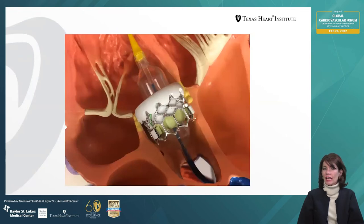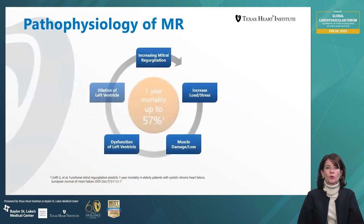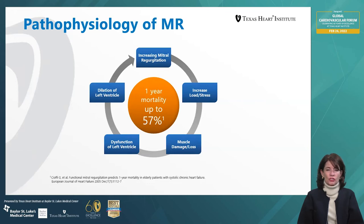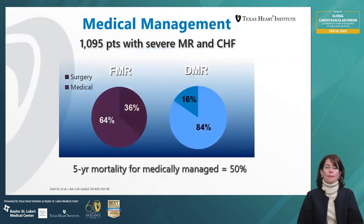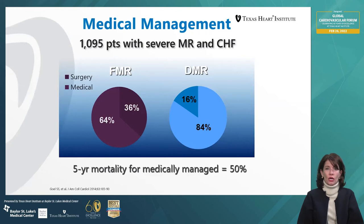Mitral regurgitation is very common and increasing in our population. The pathophysiology of MR is a circular problem: a little MR increases load and stress, causes muscle loss and dysfunction in the left ventricle, leading to LV dilatation, which leads to increasing levels of MR — with one-year mortality for significant MR up to 57%. Medical management defined by functional or degenerative status shows that five-year mortality for medically managed MR is 50%, so we are not doing a great job with current therapies, particularly because many patients are not good surgical candidates.